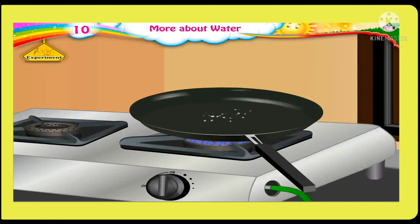Now here is one more experiment. Sprinkle a few drops of water on a frying pan. We observe that the water sprinkled on the pan makes small round beads and disappears. How did this happen? The heat of the pan changes the water droplets into water vapour all at once, and the water drops vanish.